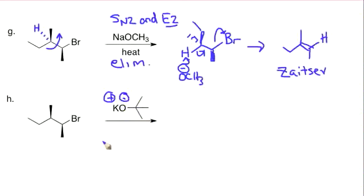And because it's bulky, it favors Hoffman elimination. So that means we get the less substituted double bond. So now we can turn to our beta-hydrogen that are on this methyl group.